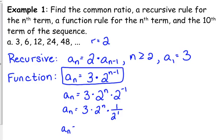You may see this function rule, and we can multiply the 3 times the 1 half. You may see this written as 3 over 2 times 2 to the nth. I know it doesn't look like it, but that is the same thing as the very first function rule that we wrote. Those are equivalent.